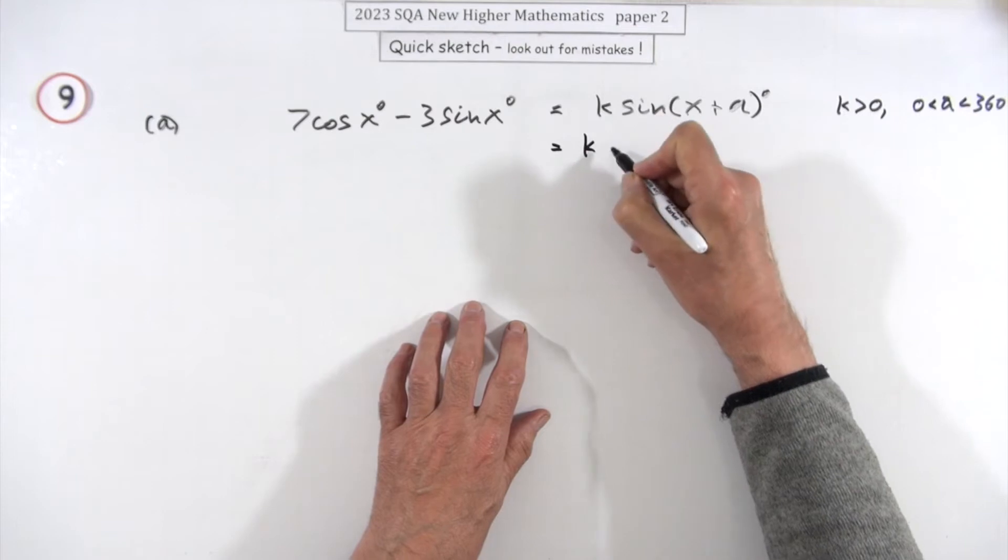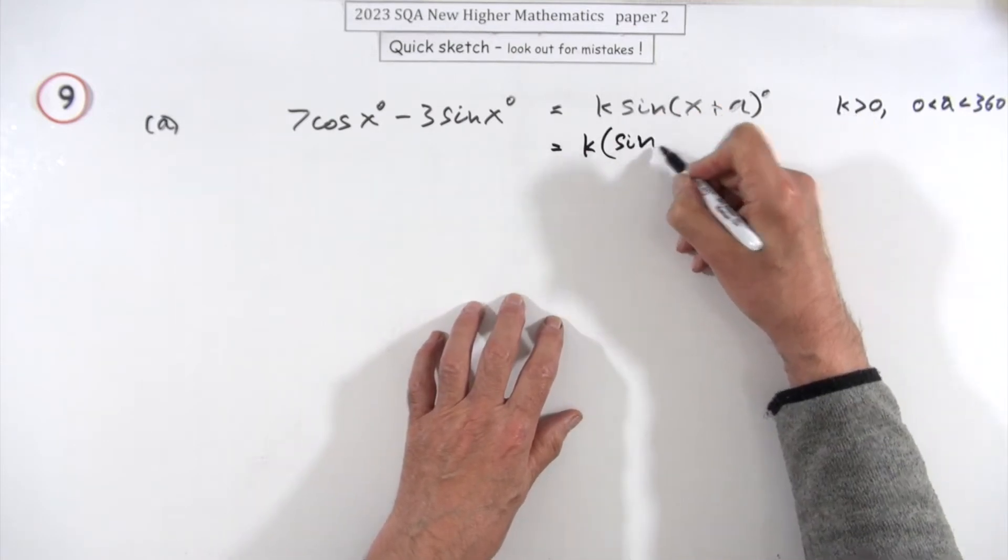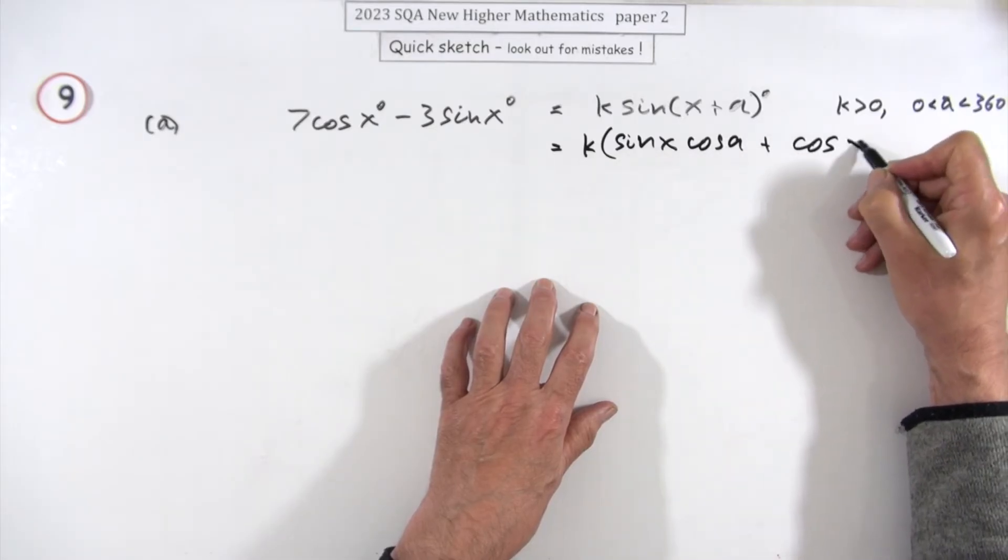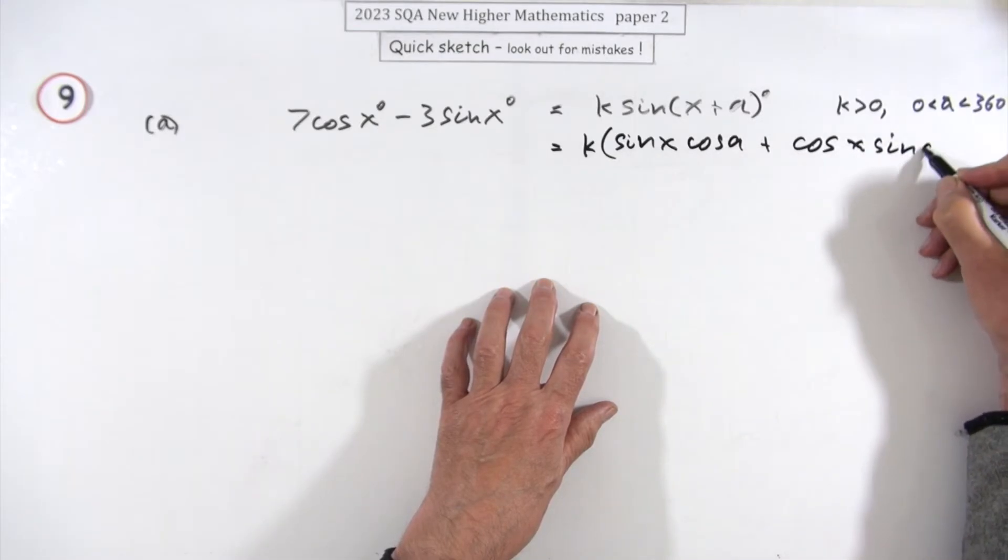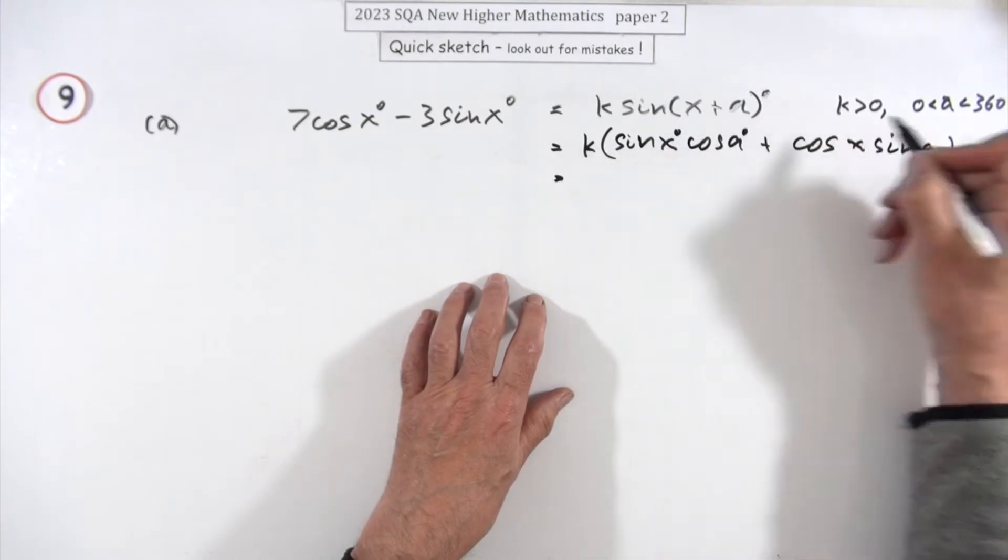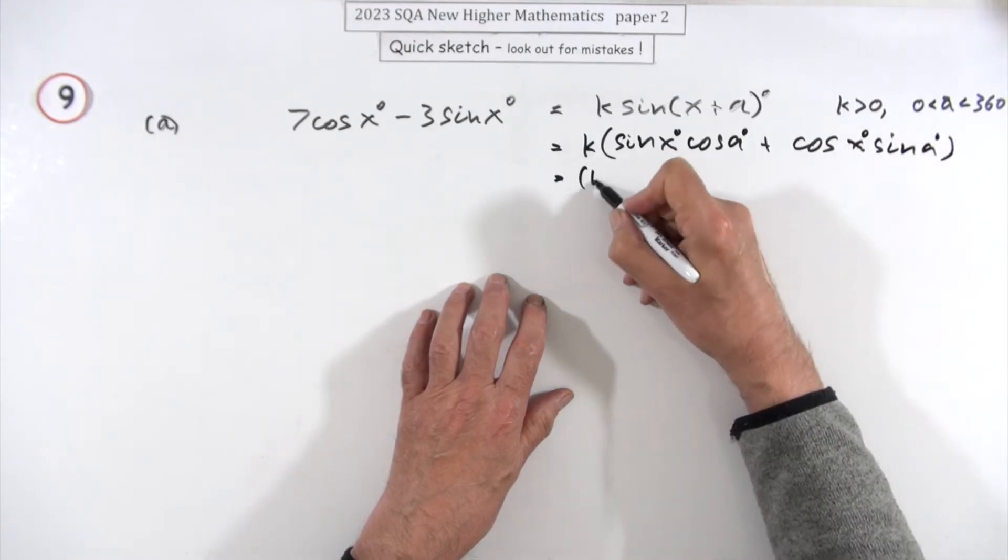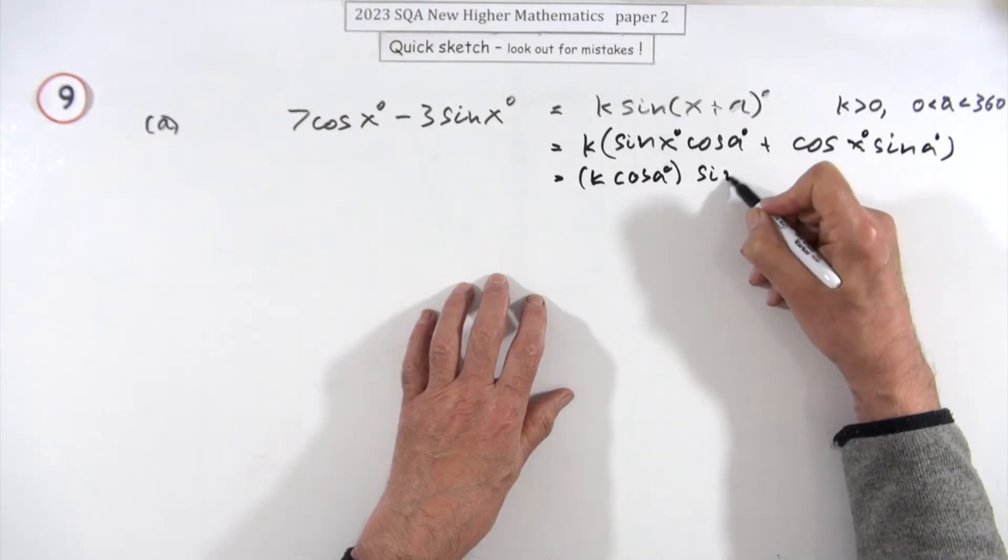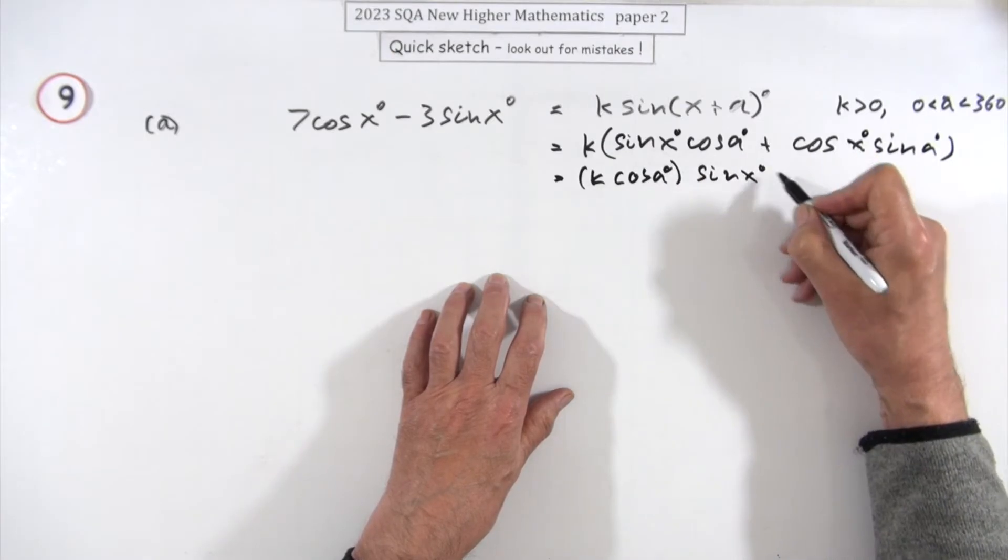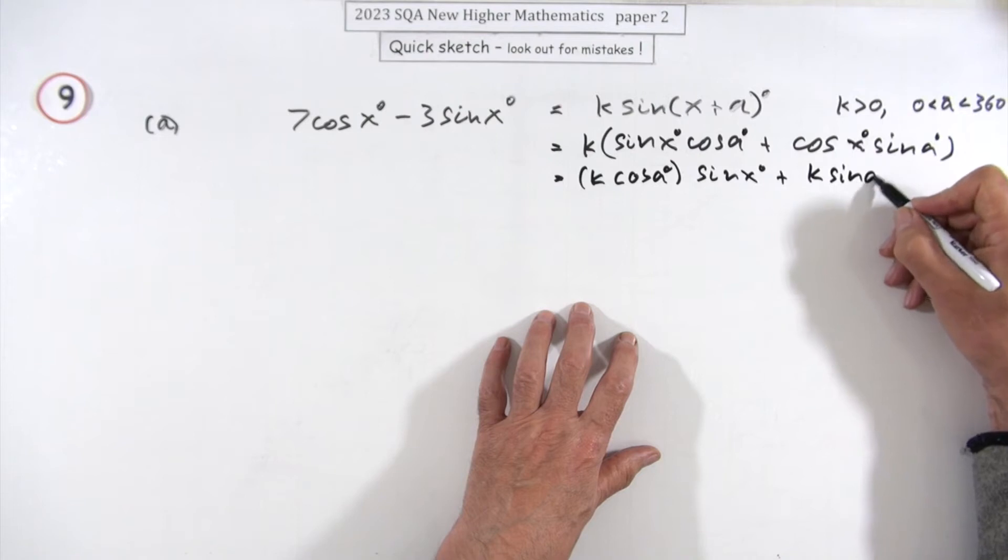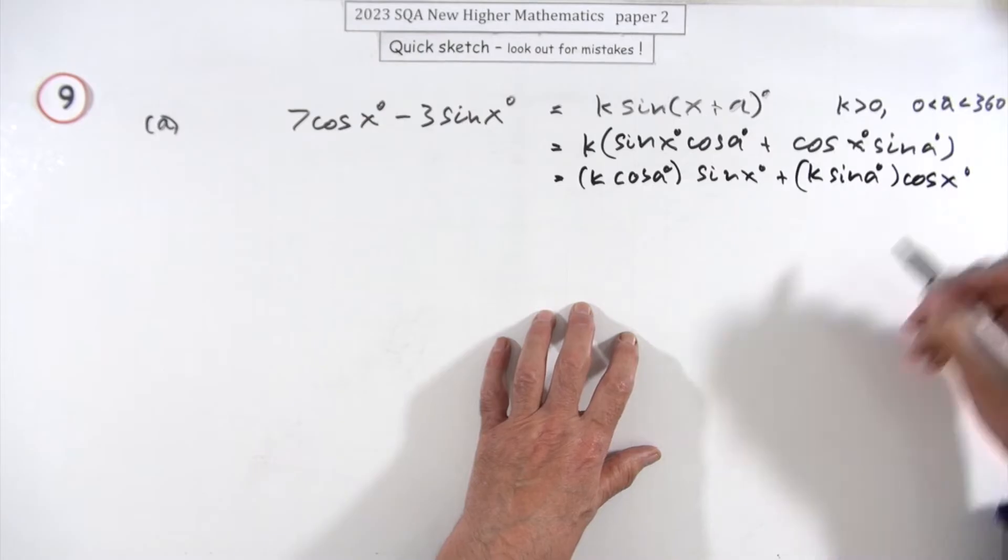So it'll be k times, and the sine goes to sin α cos x plus cos α sin x. I know it should have all the degree signs in. Then I'll just pick out specifically the coefficients. The coefficient of sin x is that part, and k multiplies this as well. You could go straight into this line. The coefficient of the cos x term is this part.